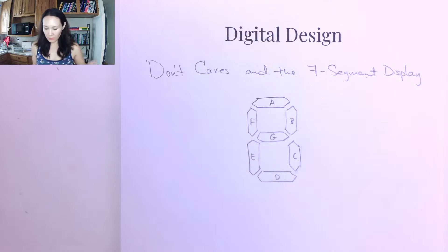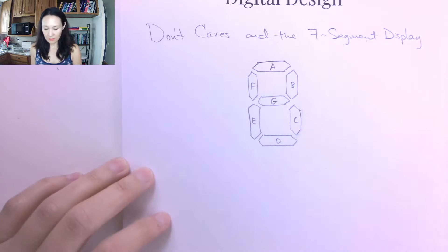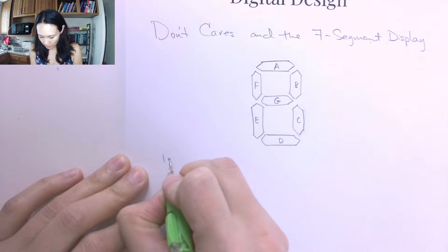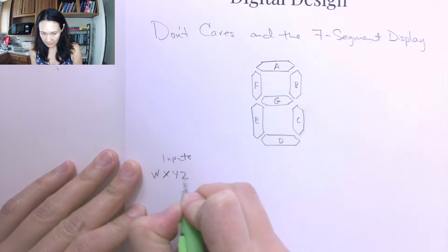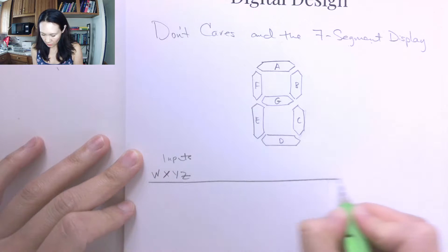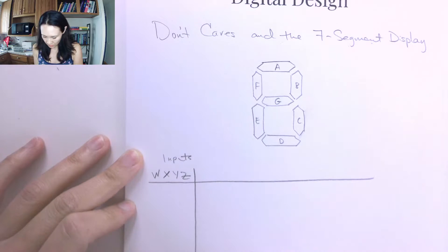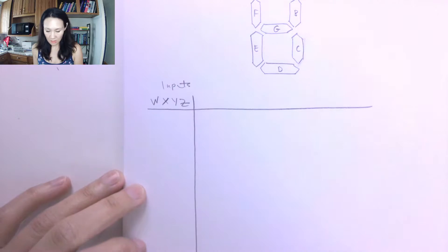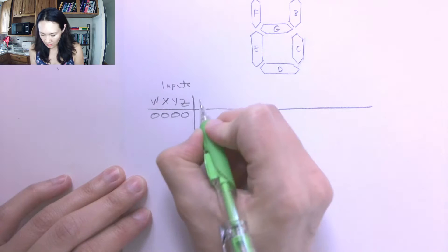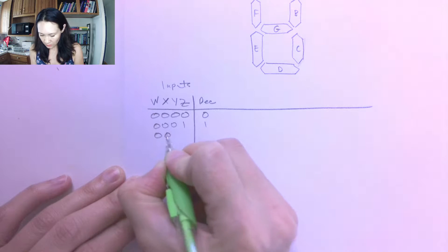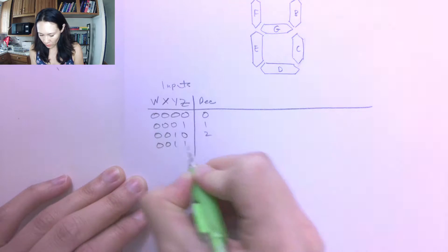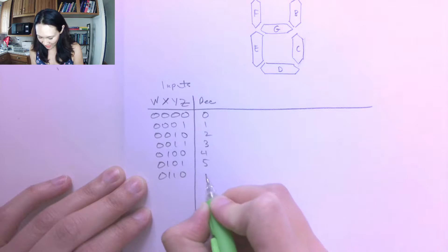So let me show you the truth table for the seven segment display. Suppose our inputs, I'll call them W, X, Y, and Z. These are going to scroll from zero to 15 in binary. So this is 0000, this is decimal zero. 0001 is one, 0010 is two, 0011 is three, 0100 is four. You guys have seen me do this a lot. You're going to be so good at counting in binary soon.